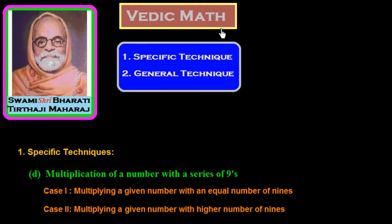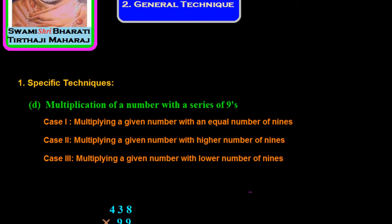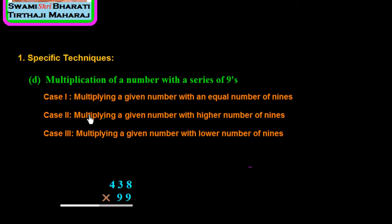Hi friends, in this session of Vedic Mathematics we are studying about the specific technique — multiplication of a number with a series of nines. In the last two sessions we studied Case 1 (multiplying a given number with an equal number of nines) and Case 2 (multiplying with a higher number of nines). Here in Case 3, we are multiplying a given number with a lower number of nines.